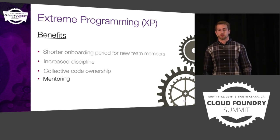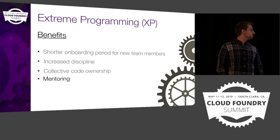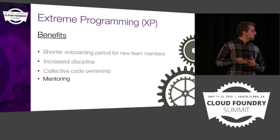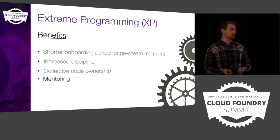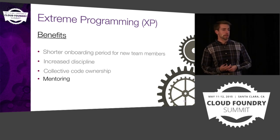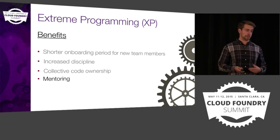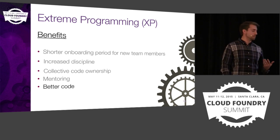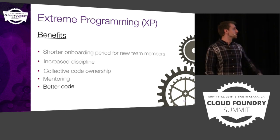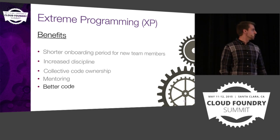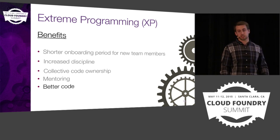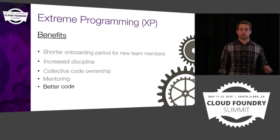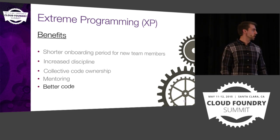Mentoring: younger developers can get up to speed and learn process a lot faster, because they pair with senior devs who pass that knowledge to them. Better code kind of comes from all these things. The huge part of this process is to produce better, tested code, so you have fewer bugs and fewer iterations going back to fix things you missed the first time. And a huge reason this happens is because of TDD.